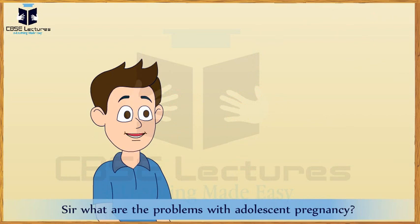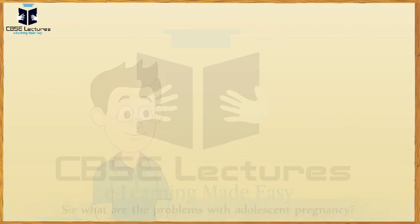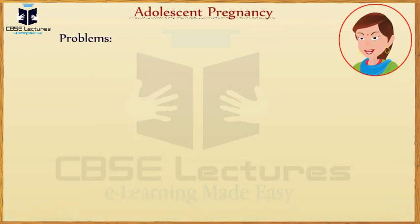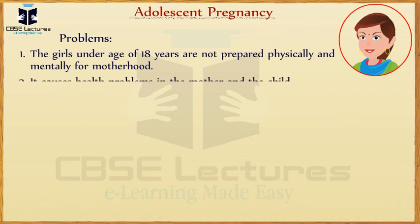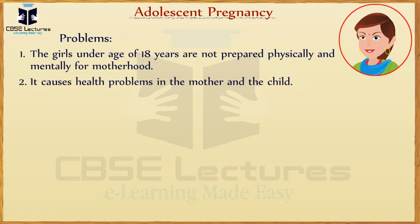What are the problems with adolescents and pregnancy? Girls under the age of 18 years are not prepared physically and mentally for motherhood. This causes health problems in both the mother and the child.